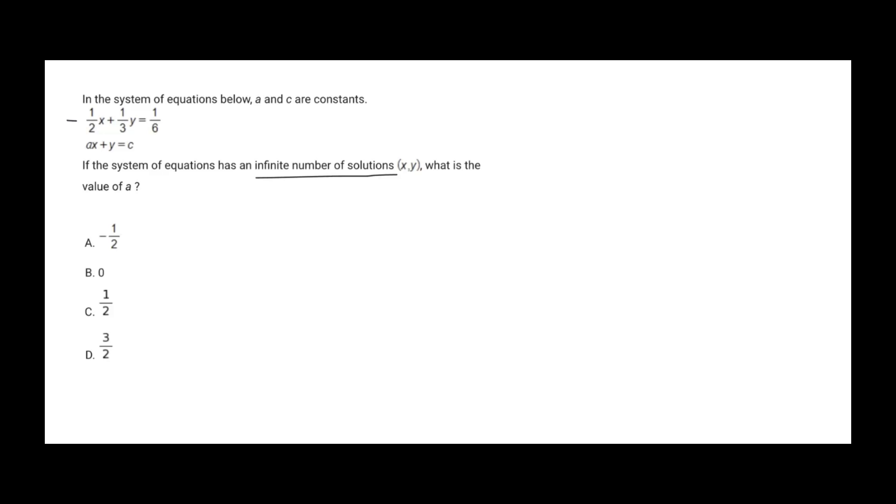And therefore, we can just compare both equations here. So the easy way to do this, in my opinion, is to just set these on top of each other. So we have one half X plus one third Y equals one sixth. And then we want to set this above. So we have AX. We're trying to find A. We don't know what that is yet, but we will in a second, because we want these to be the exact same equation.